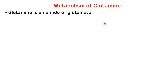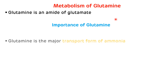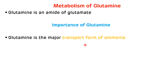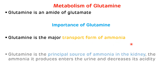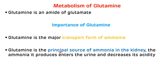Now, metabolism of glutamine. Glutamine is basically an amide of glutamate. The first and very important function of glutamine is it is the major transport form of ammonia. The second important thing regarding glutamine is it is the principal source of ammonia in the kidney, and this ammonia which is produced enters the urine and decreases its acidity, so glutamine plays an important role in the regulation of acid-base balance.